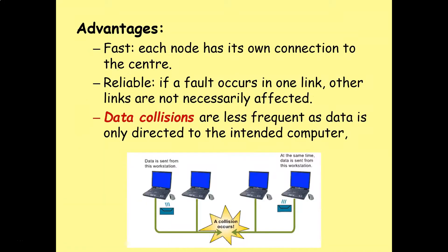So why might we use a star network topology? Well, it's fast. Each node has its own connection to the center. It's reliable. If a fault occurs in any one link, other links are not necessarily affected. Data collisions are also less frequent, as the data is only directed to the intended computer.